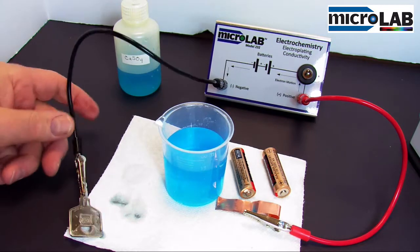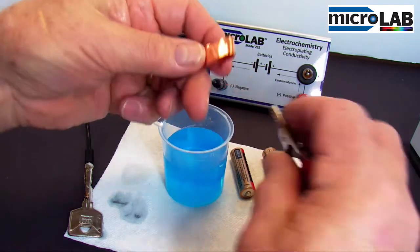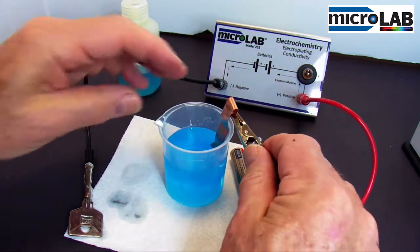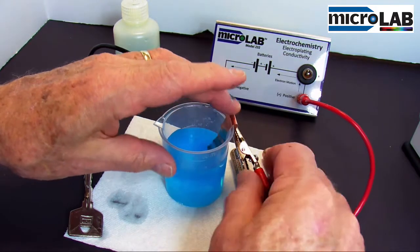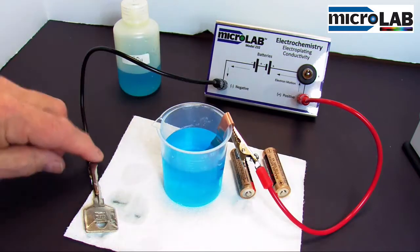Now let's add something to this. I have here just a piece of copper, and I'm going to connect this to the red lead and put it down in the solution. So I have a piece of copper on this side, and I'm going to stick my key back in.